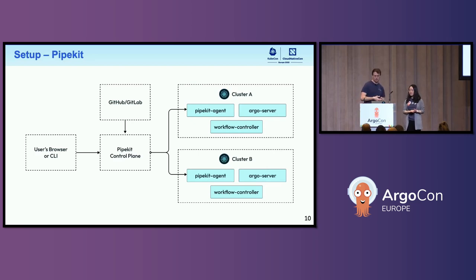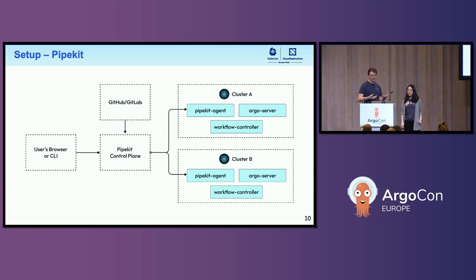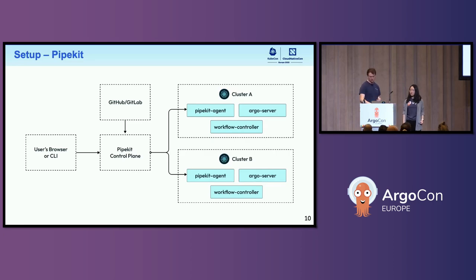Here is an architecture diagram. You'll see similarities between our architecture and Bloomberg's. A user can submit through the PipeKit control plane using their browser or CLI. We have the connection to GitHub or GitLab, and then multiple clusters — cluster A and cluster B — each with the PipeKit agent installed. The agent submits workflows and workflow templates to the Argo server directly, and relays logs and other resources back into the PipeKit control plane. Notably, the PipeKit agent doesn't allow any ingress through HTTP — it pulls from a queue set up through Redis and has egress only back into the PipeKit control plane, which is an interesting security feature.